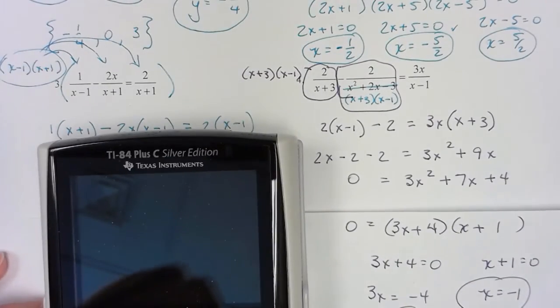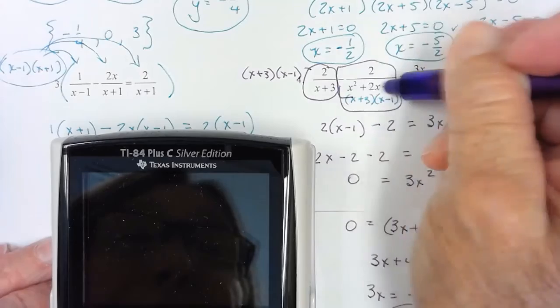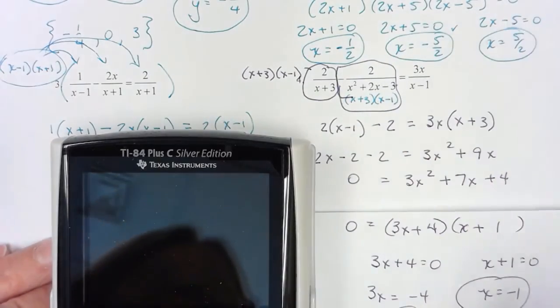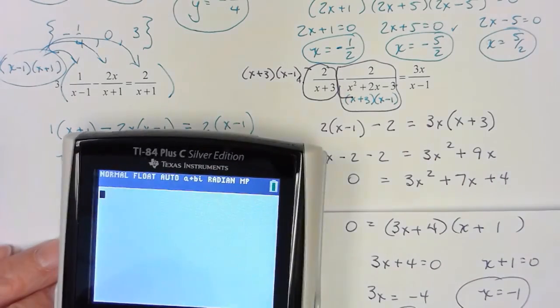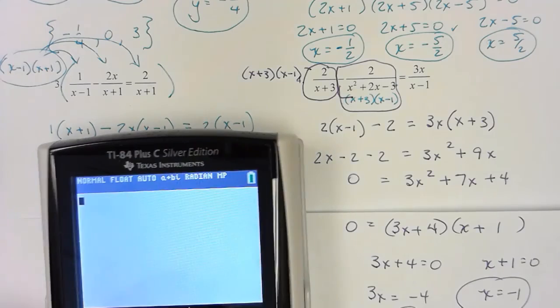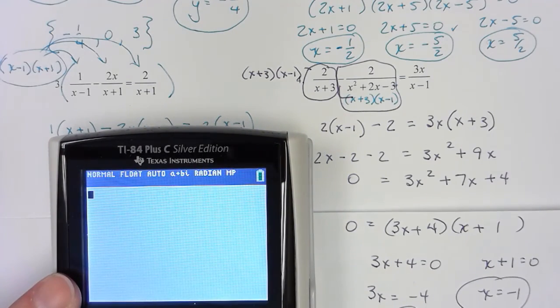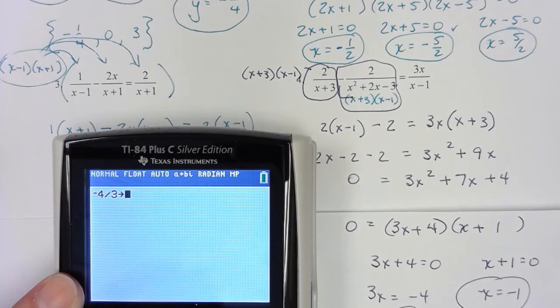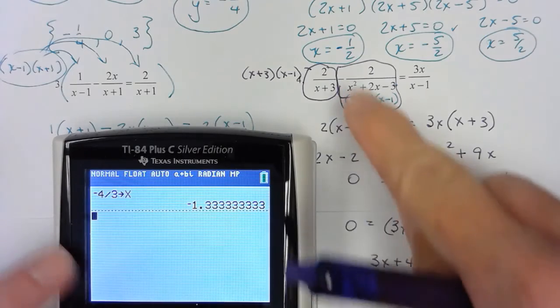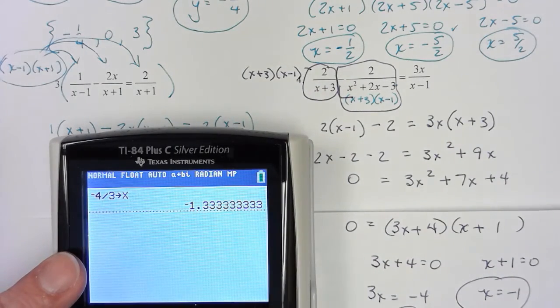I'm going to check this one because it's sort of odd and hopefully you'll be able to see how I check it. Because I've got to go back to the original. I think I will do the negative 4 thirds. So negative 4 divided by 3, storing for x.